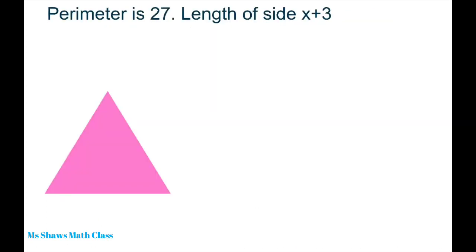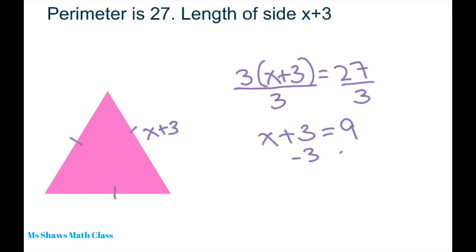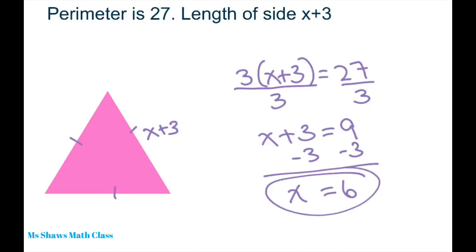We have an equilateral triangle. The length of each side is X plus 3 and we have to solve for X. So we're going to have 3 of these because this is equilateral. That's 3 times X plus 3 equals 27. We're going to divide both sides using the division property of equality and divide by 3, so you get X plus 3 equals 9. Again use your subtraction property of equality and you get X equals 6. So each side is actually 9 because 6 plus 3 equals 9.